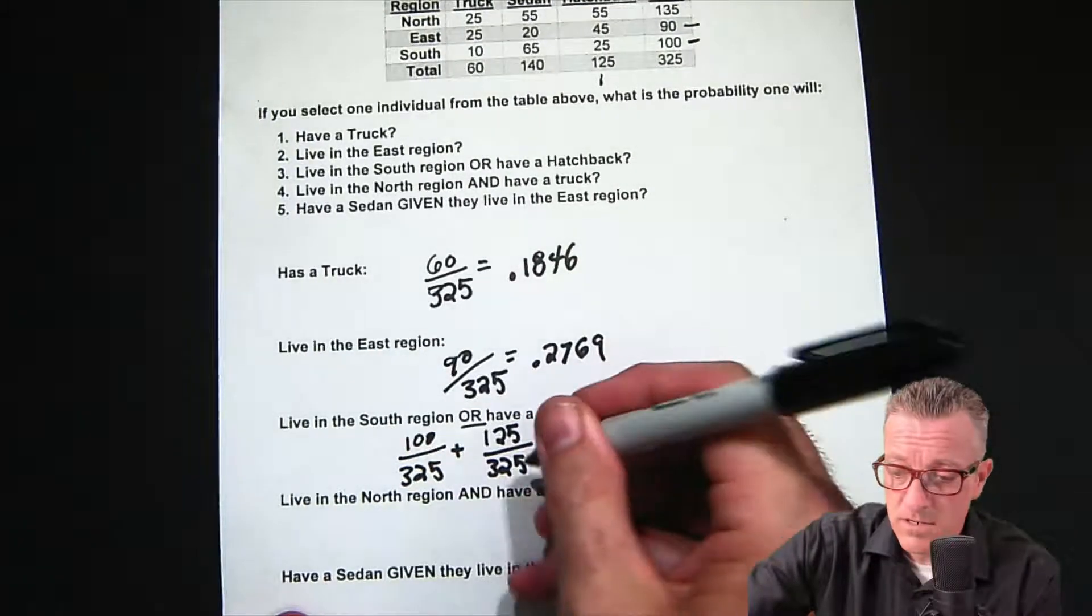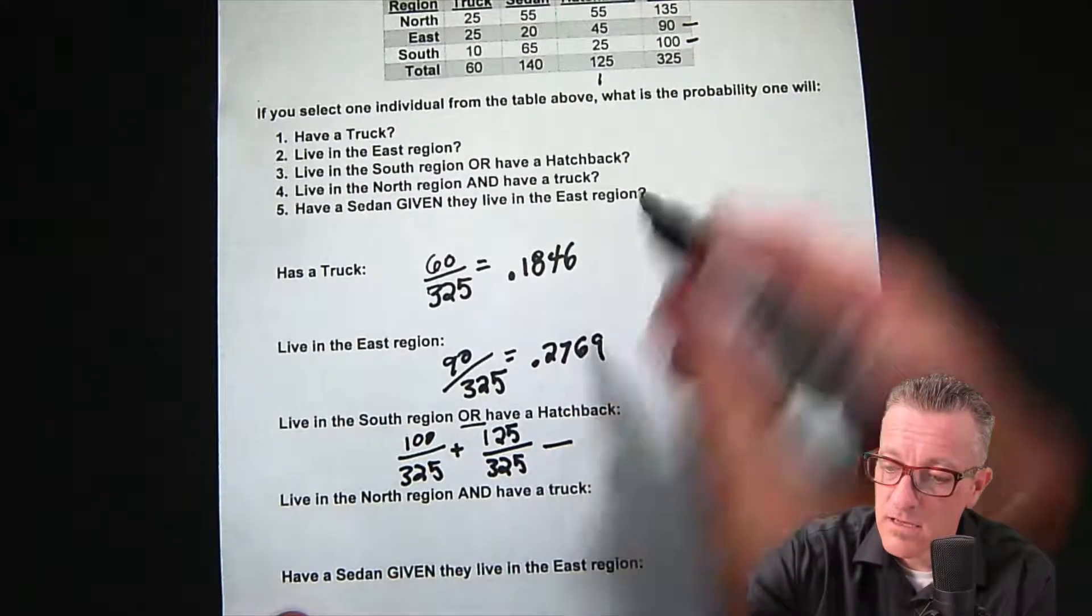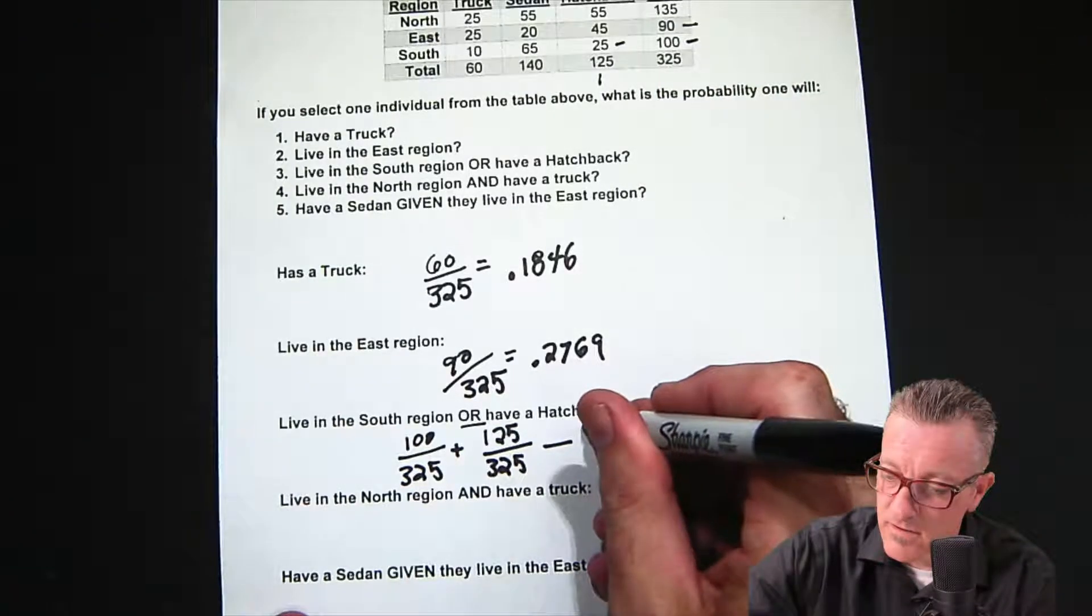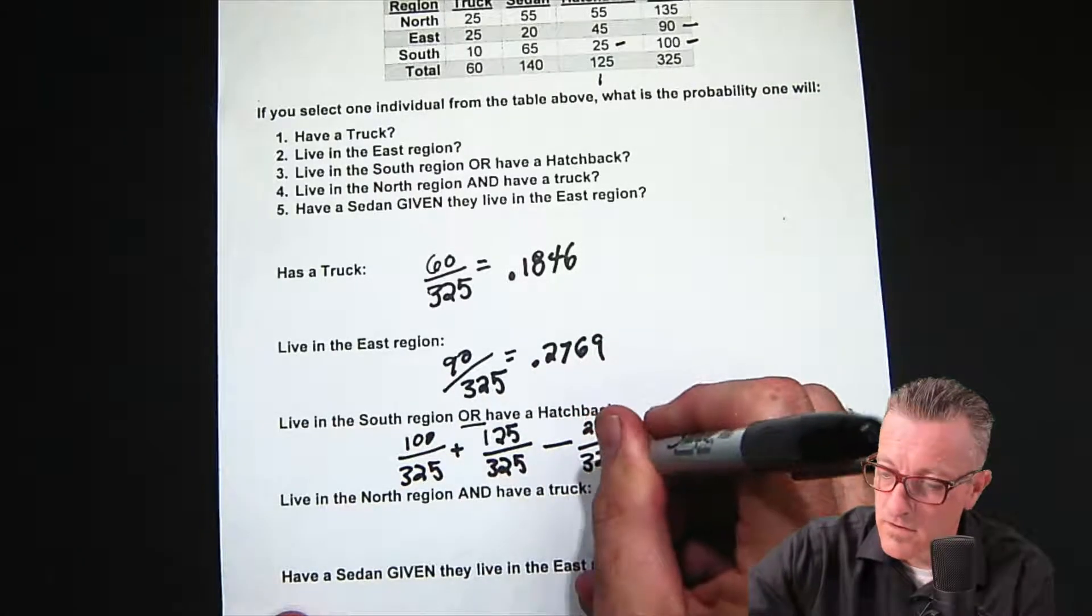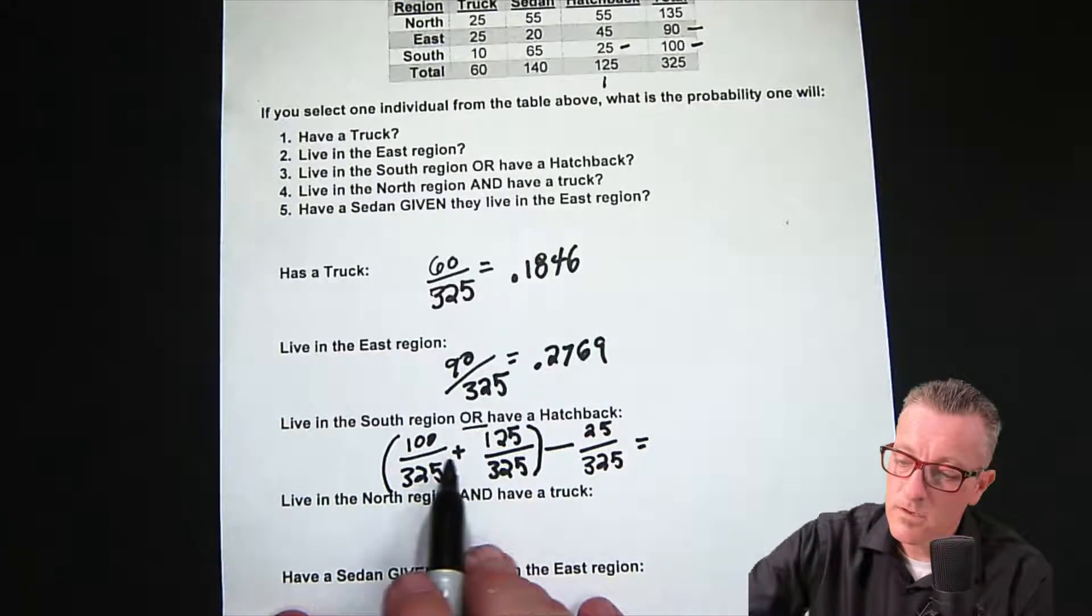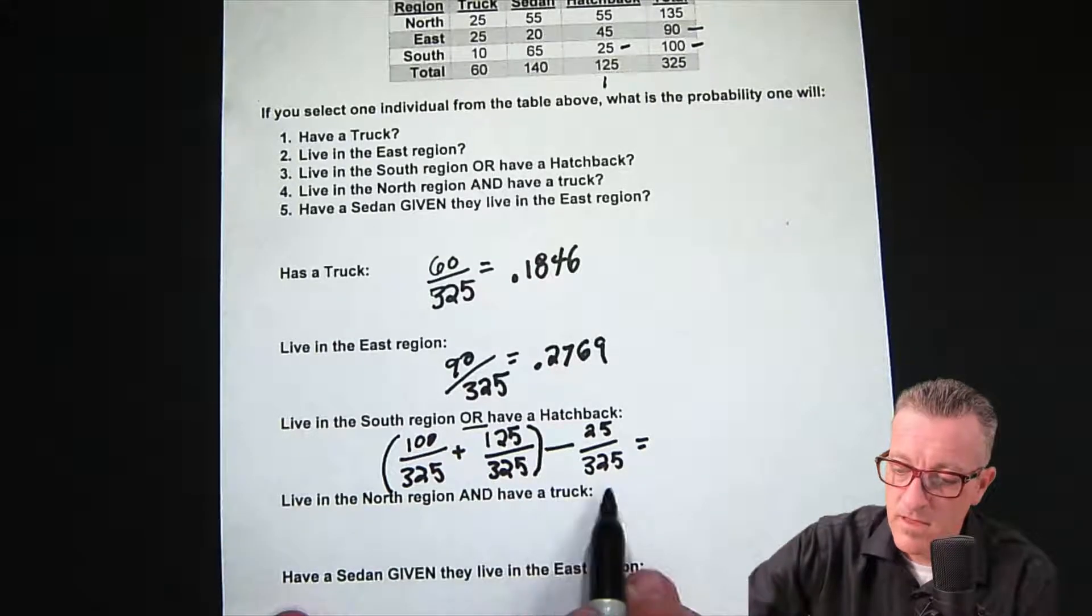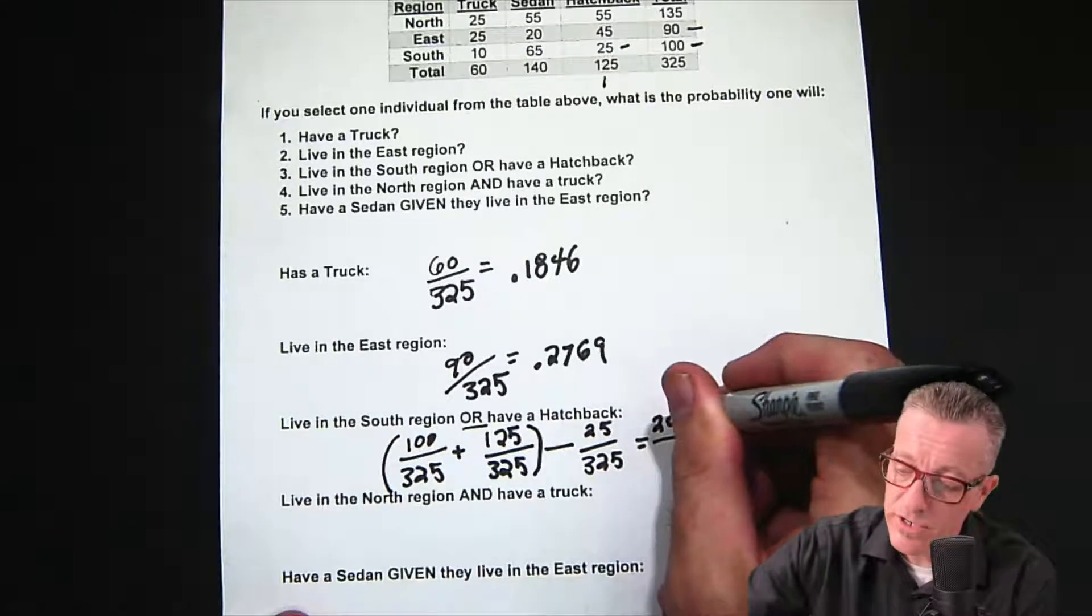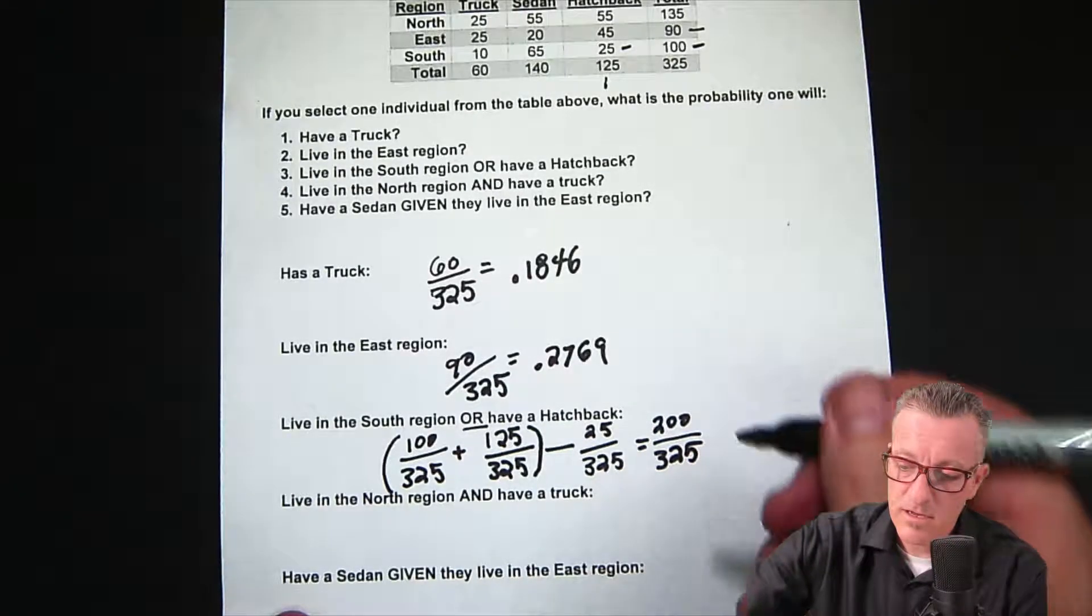So we have to take it out and then it will only be counted once, which is more appropriate when you think about it. So the live in the South and have a hatchback, South hatchback, it's 25, so it's 25 over 325. Our answer is 200 over 325 because if we just look at these numerators, the denominators are all the same, so we would have 225 then we subtract 25 so we end up getting 200 over 325. When we work that out we could reduce it more and leave it like that, or what I have worked out here it's 0.6153, which is about 61.53%.